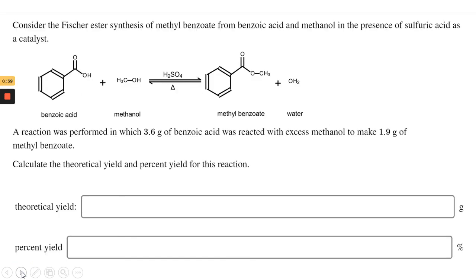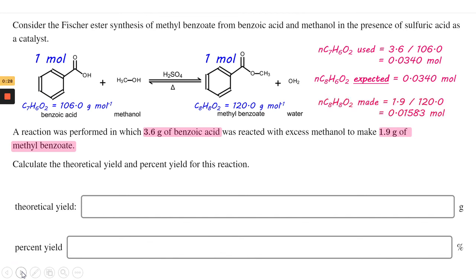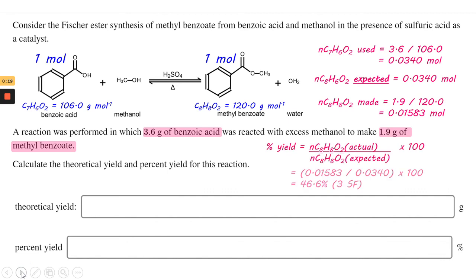Let's have a quick look at percentage yield. Using a typical example, we can see there is an equimolar stoichiometry between benzoic acid and methyl benzoate. Using the molar masses, from the question we have 3.6 grams of benzoic acid, which is 0.0340 moles. Considering the stoichiometry, you'd expect the same number of moles of methyl benzoate. However, the question says only 1.9 grams of methyl benzoate was actually made — that's only 0.01583 moles, clearly less than expected. Dividing actual over expected gives us 46.6% to 3 significant figures.